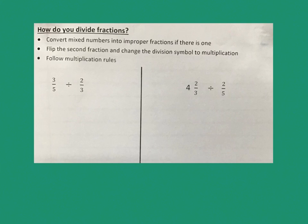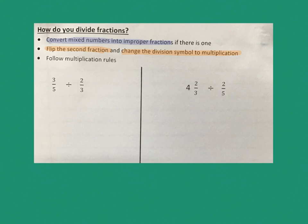Now we're going to start talking about dividing. The way you divide a fraction: first, we don't want to keep mixed numbers — we want to turn those into improper fractions if there are any. Convert your mixed number to an improper fraction. Next step, flip the second fraction upside down and change the division symbol to a multiply. Then we simply follow the multiplication rules.